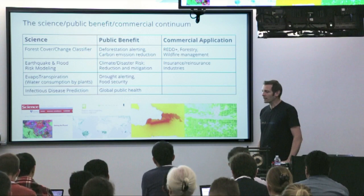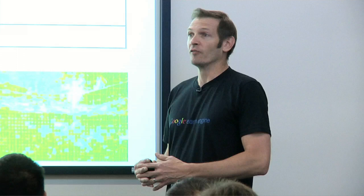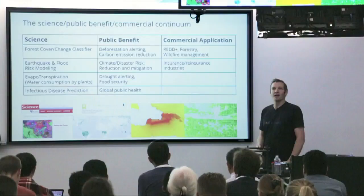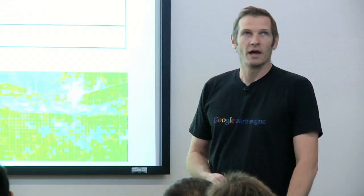Likewise, in earthquake and flood modeling, this obviously helps with disaster response and climate mitigation, but it's also really valuable to insurance and reinsurance companies because they need to know what kind of risk is actually involved. If someone's going to be building a new factory in a location, what is the flood risk? That data exists in a lot of modern industrialized nations, but it doesn't exist in many places in the world. Companies need to understand what kind of risks they're facing and how to address those risks.